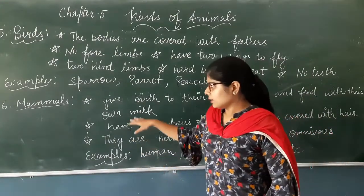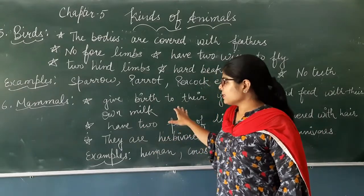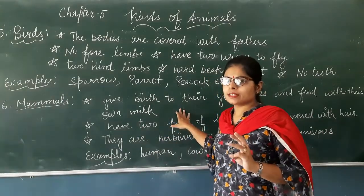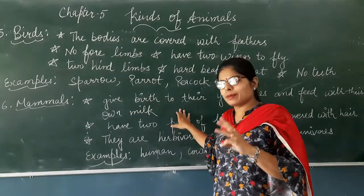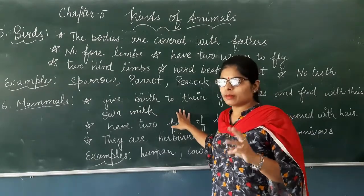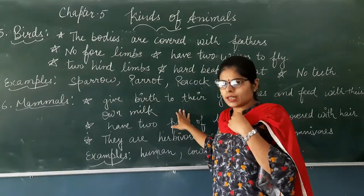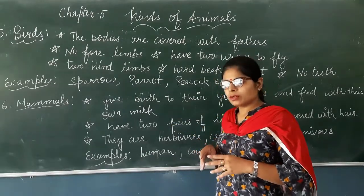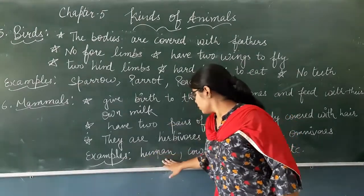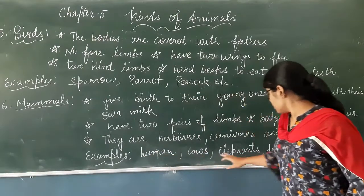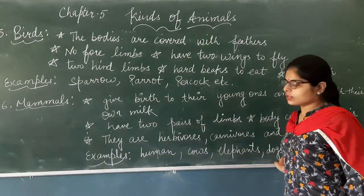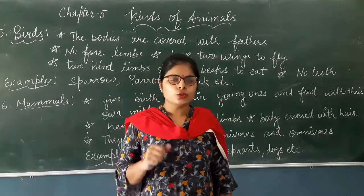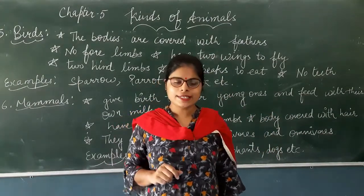A special thing about mammals is that all mammals have hair on their bodies. Examples include humans, cows, elephants, and dogs. Chapter 5 has been completed — go through it. Have a nice day, bye-bye.